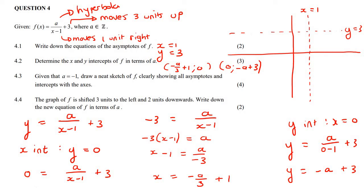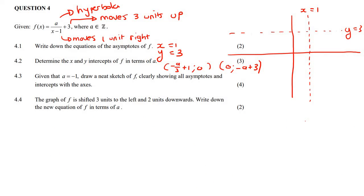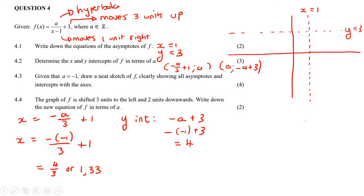The next one says, given that a equals minus one. Thank you for that. They tell us what a is, and now they just want us to draw the graph. So because they've told us that a is minus one, we can quickly go work out the proper x intercept now. We know it's currently minus a over three plus one. So we can just go minus minus one over three plus one. And so that gives us four over three, or you can write it as one comma three three. So that's the x intercept. And then the y intercept, we know that that was just minus a plus three. So that's going to be minus, now a is minus one, and that's going to give us four. So we've got the x and the y intercepts now.